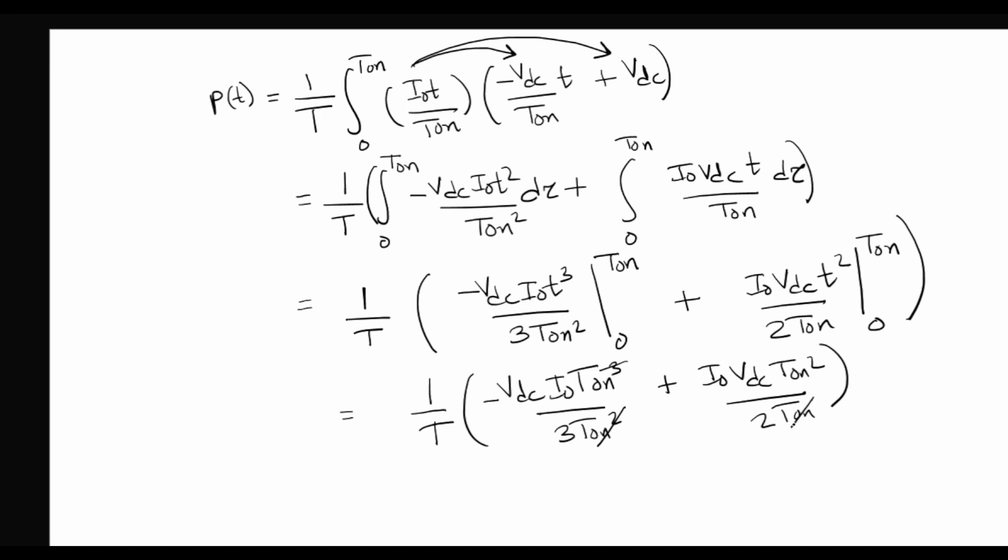These cancel here: minus VDC I0 T on plus half I0 VDC T on. This expression can be further simplified by taking the LCM: minus 2 VDC I0 times T on plus 3 times VDC times I0 times T on divided by 6.